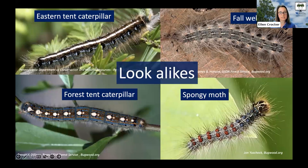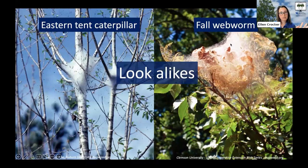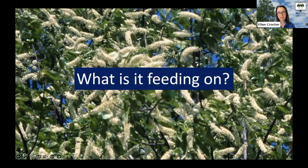Another way to tell them apart is how they're living. Eastern tent caterpillar has those really obvious silky, webby tents right at the point where the branches meet the trunk. Fall webworm, which you might see a little later in the season, has looser tents that are further out on the branches, not as close to the trunk. Also consider what it's feeding on — eastern tent caterpillar really likes trees in the rose family: black cherry, plum, apple, crab apple, and others. Other species might have different preferences, and their egg masses will also differ.